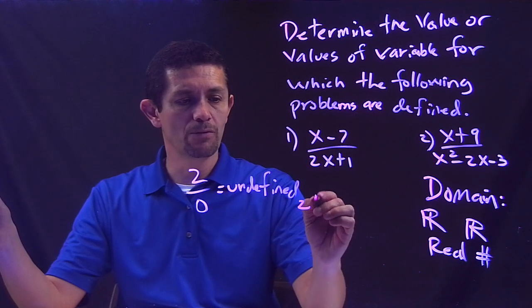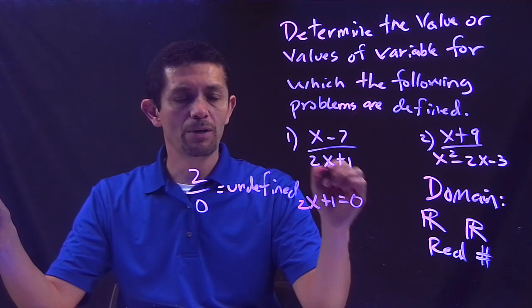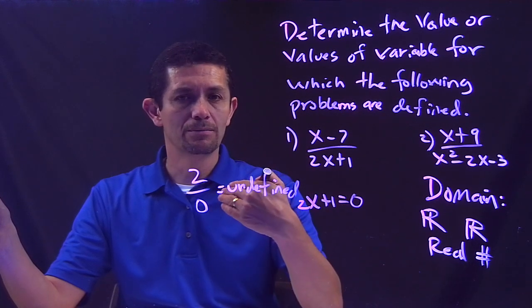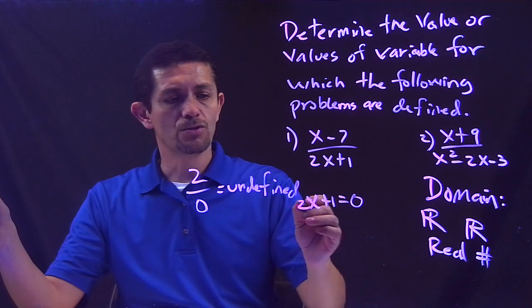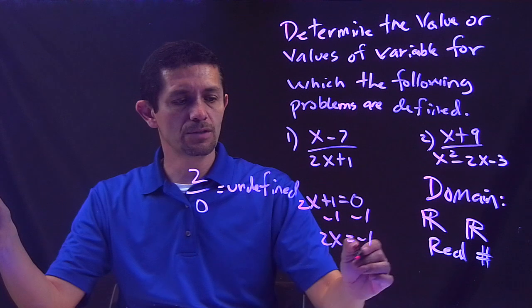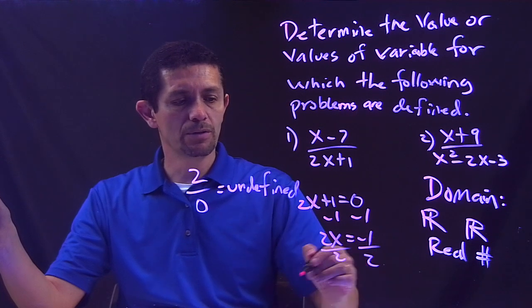Then we said, I don't want the denominator to be 0, so I'm going to make whatever my denominator is equal to 0, and that value will be out of my domain. So 2x plus 1, I need to solve for X, so it's going to give me 2x equals negative 1, divided by 2.